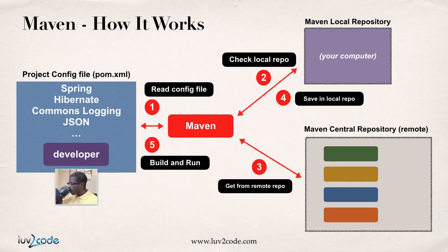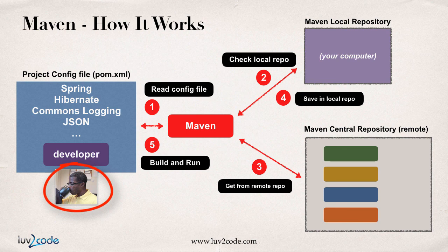The whole idea here is that we give Maven a shopping list such that this developer here in the bottom left can sit there and drink his coffee. He doesn't have to manually go to every website. Simply build a shopping list, and then Maven will go do all the work for them. That's the main idea on how Maven works in the background.